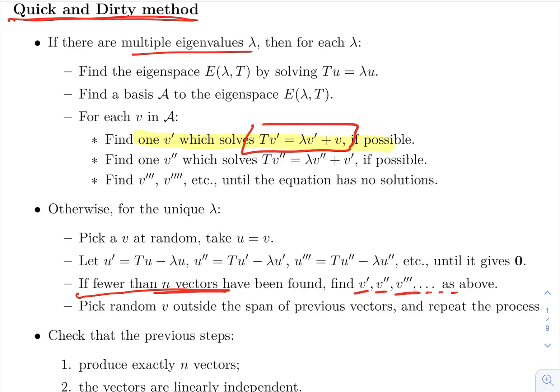And if you have a set of vectors that spans your space, if it does, then you're lucky, you found a Jordan basis. If not, well you pick another random v.